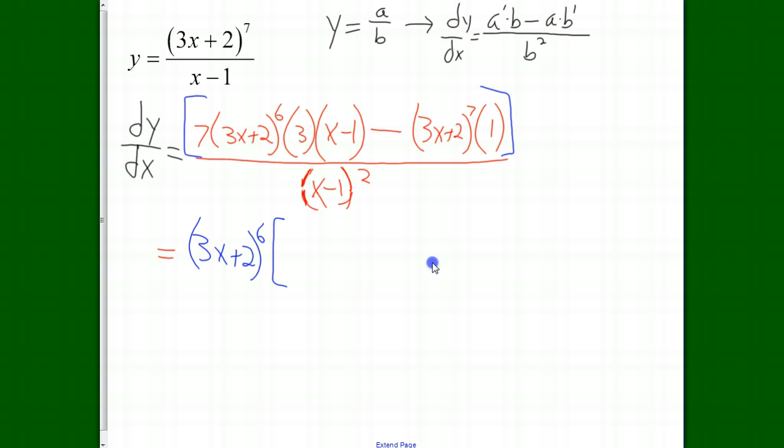What we are left with is, from this first term, we factored out all of those. So we got a 7 times 3 times an x minus 1. So that's 21 times x minus 1 minus, from this second term, we factored out 6 of those 3x plus 2's. That means there's one of them left over. And the factor of 1, we don't really need that. All of this is over x minus 1 quantity squared.